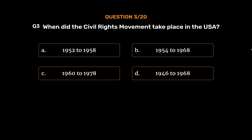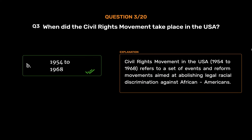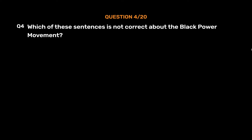The correct answer is Option B: 1954–1968. The civil rights movement in the USA, 1954–1968, refers to a set of events and reform movements aimed at abolishing legal racial discrimination against African Americans.